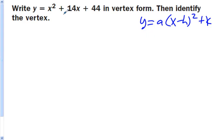The first thing I'm going to do is take the original equation and rewrite it. Y, I'm going to leave a space, equals x squared plus 14x. I'm going to leave another space and put my plus 44. So you'll notice that there's two gaps here.